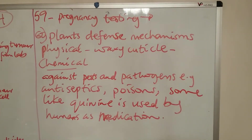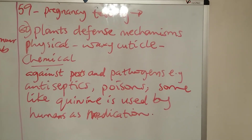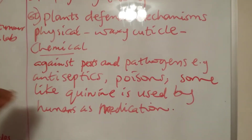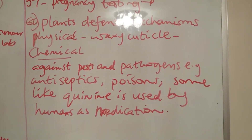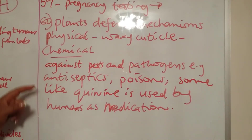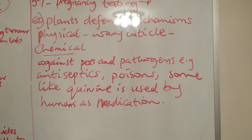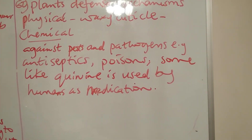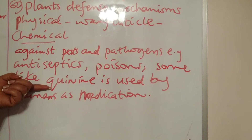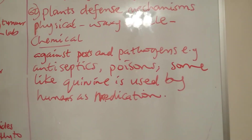Question 60 is on plant defense mechanisms. Plants have physical defenses, including a waxy cuticle, which stops pathogens from entering the leaf. The waxy cuticle also ensures water runs off, so microorganisms or pathogens can't find a place to breed and infect the plant. Plants also have chemical defenses against pests and pathogens — some plants produce antiseptics which destroy pathogens, and poisons that keep pests away. Some plants produce quinine, which is not only useful to the plant but is also useful to humans in medicine.